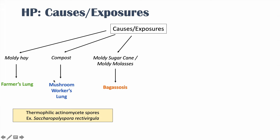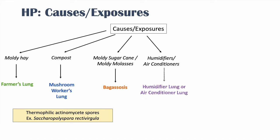So moldy hay leads to farmer's lung, compost leads to mushroom worker's lung, and moldy sugarcane or moldy molasses leads to bagasosis. Another exposure is humidifiers or air conditioners, which can lead to what we call humidifier lung or air conditioner lung. There are also exposures to saunas or hot tubs, which can lead to hot tub lung.